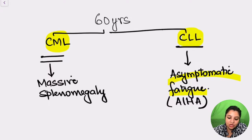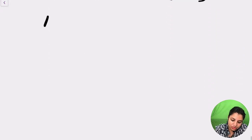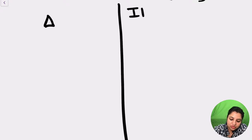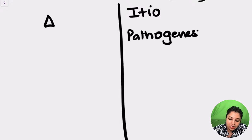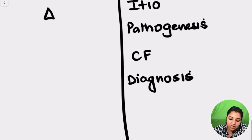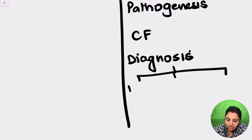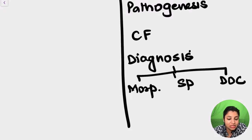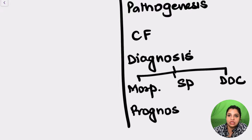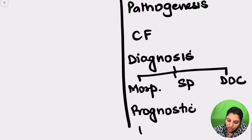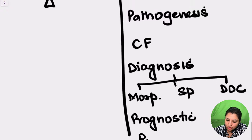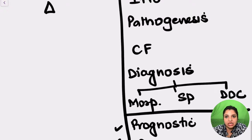When approaching a university question, first make the diagnosis, then address it under specific headings. First: etiology — why is this happening? Second: pathogenesis. Third: unique clinical features. Fourth: diagnosis, which in hematology covers three sub-headings — morphology, special tests, and diagnosis of choice. Then, if you know them, include prognostic factors and therapy. The last two are optional, but everything up to diagnosis is mandatory, along with diagrams and charts.